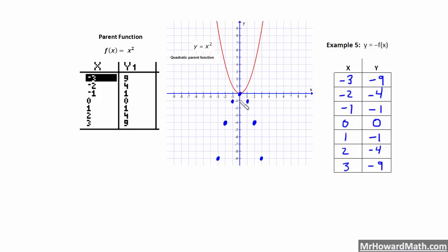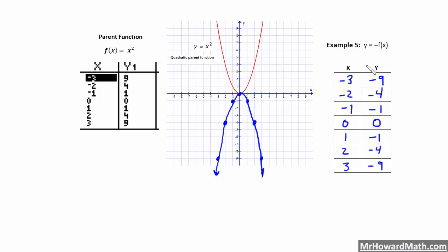Here we have all of our points. We just reflected those over the x-axis, which changes the sign of our y-coordinate. We can graph this in here, and we see our reflection about the x-axis — which is what happens when we take the opposite of our y-values, which is what negative f of x actually does. Let's look at our next example.